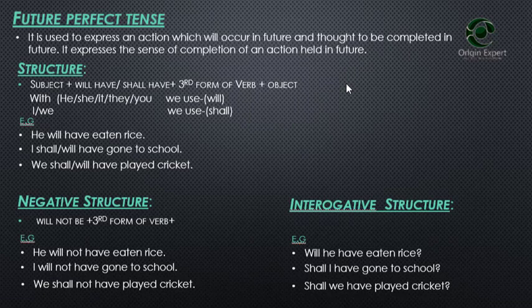What is the structure of the future perfect tense? The structure is: Subject + helping verb (will have / shall have) + third form of the verb + object.